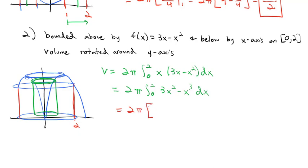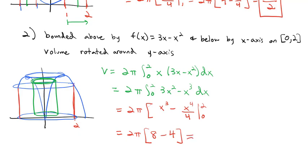Integrating gives 2π times [x³ − x⁴/4] from 0 to 2. Plugging in the values: 2π times (8 − 16/4) = 2π times (8 − 4) = 2π · 4 = 8π cubic units for our volume.